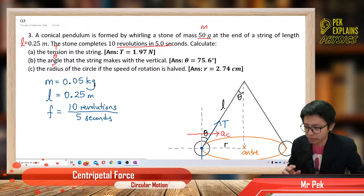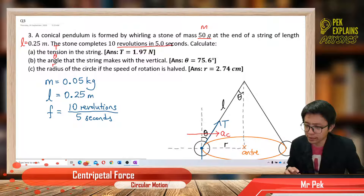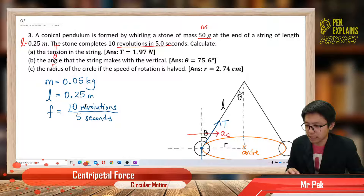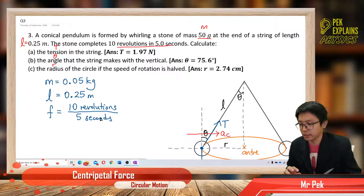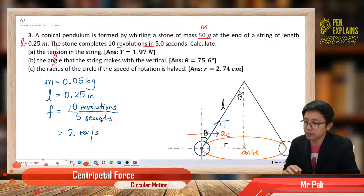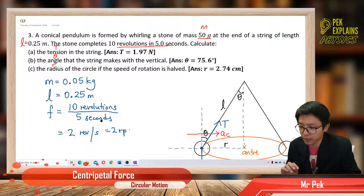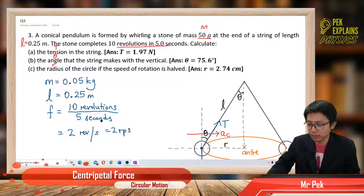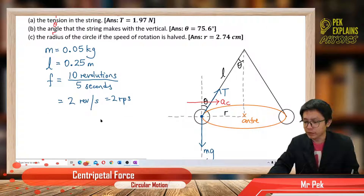This is the information given: mass, changed to kilograms already; length in meters; and the frequency — 10 revolutions in 5 seconds, so we can find frequency. You just take 10 revolutions divided by 5 seconds, and we get 2 revolutions per second, or 2 RPS.